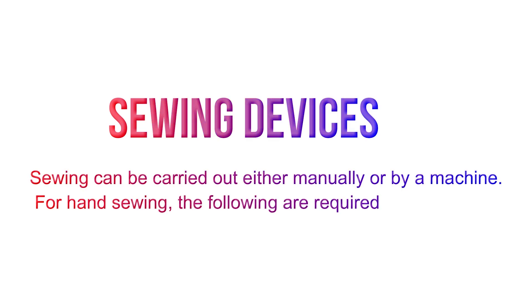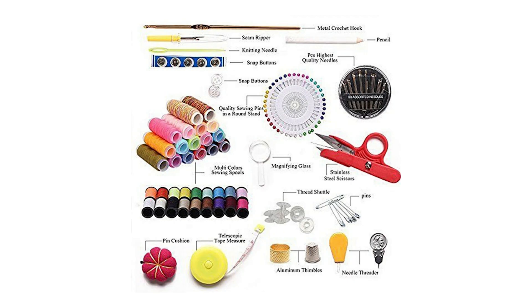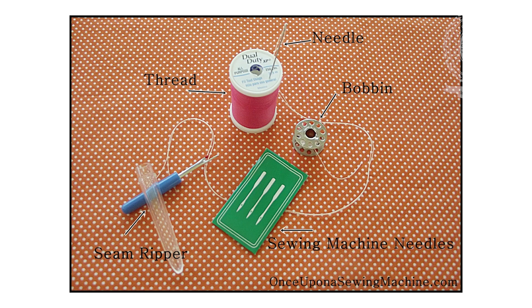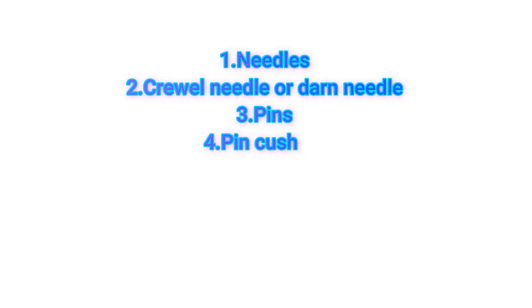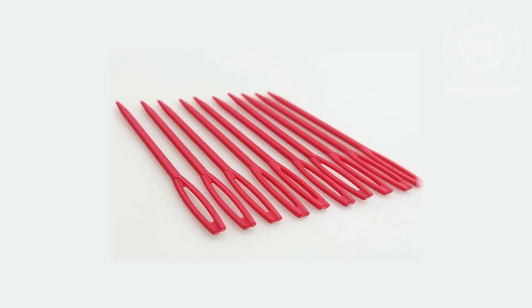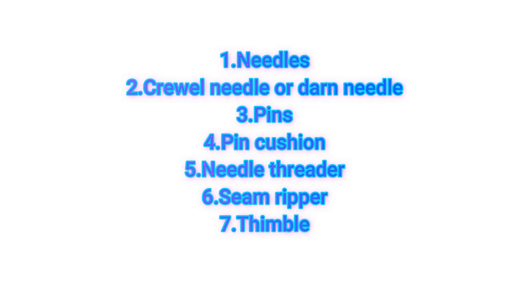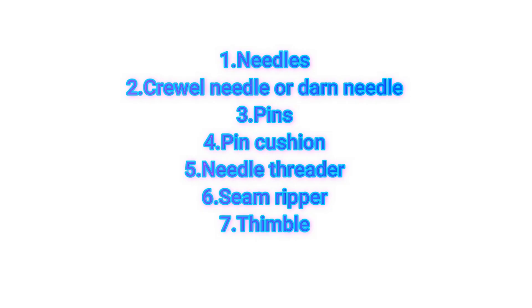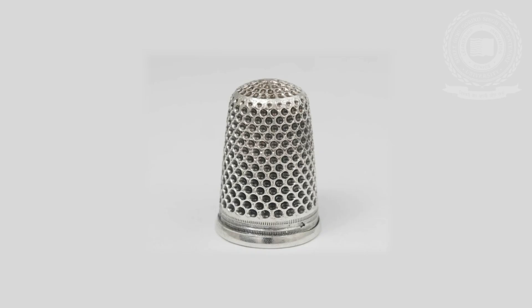Then we have sewing devices. Sewing can be carried out either manually or by machines. In sewing devices we can use needles, screw needles or drawn needles, pins, pin cushions, needle threader, seam ripper, and thimble.